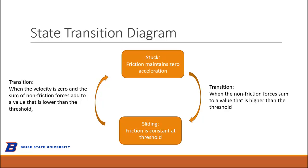On the other side, to make the transition from sliding to stuck, two things have to happen. First, the velocity has to get to zero — it can't instantaneously get stuck from a non-zero velocity. And second, there's not enough external force to push it through zero velocity. The velocity has to be close to zero, and the sum of the non-friction forces has to be lower than the threshold. Then it gets stuck and moves into the other state.